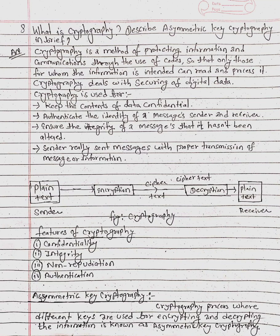The cryptography process works as follows: plaintext is taken at the sender's side, it is encrypted to generate ciphertext, and this ciphertext is then decrypted by the receiver to generate the same plaintext again. This is the method of cryptography as shown in the figure.